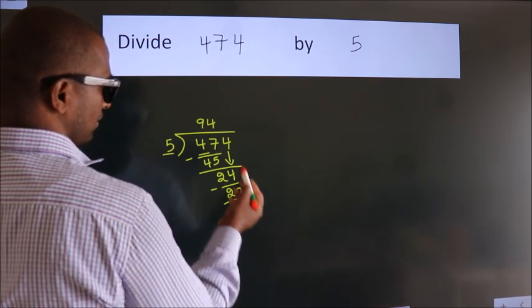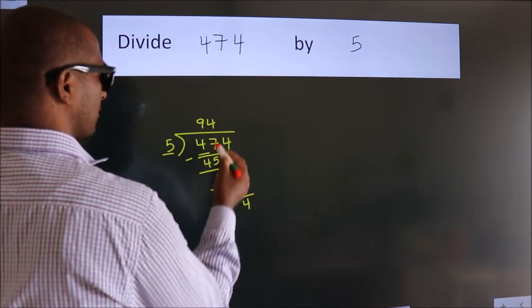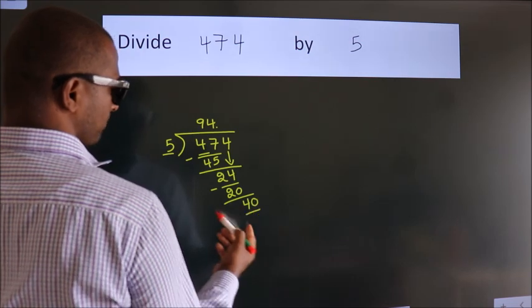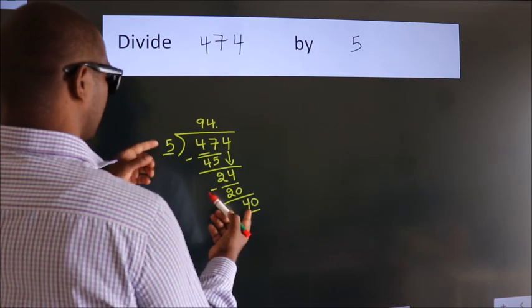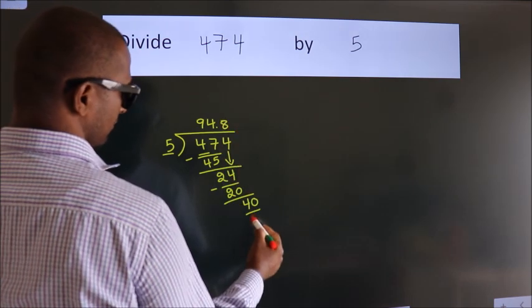After this, no more numbers to bring it down. So what we do is, we put a dot and take 0. So 40. When do we get 40? In the 5 table. 5 eights, 40.